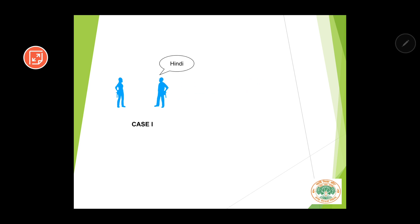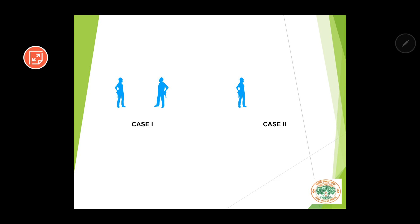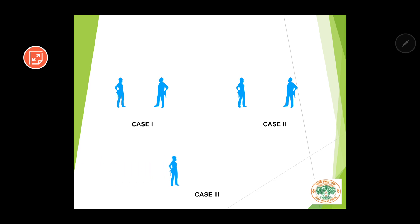Let us understand three cases. Case one: you know Tamil and your friend understands Hindi — communication cannot happen, so it is a failure. Case two: you understand Hindi and your friend has also learned Hindi — communication can happen, so it is successful. Case three: you have learned machine language and are communicating with the computer in machine language — the computer can understand, so communication will be successful. For interacting with the computer directly, the computer can understand only one language, which is machine language.